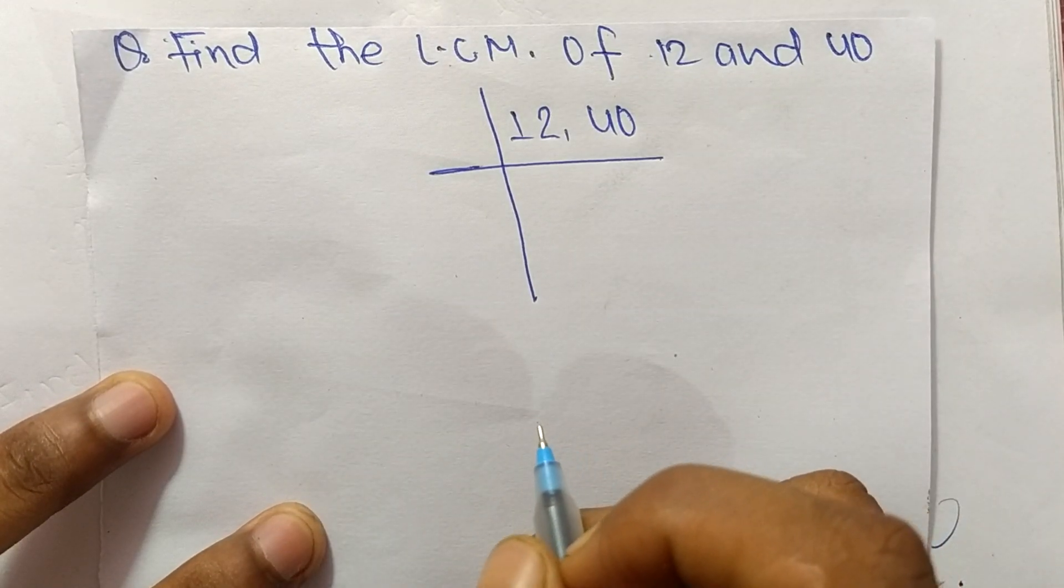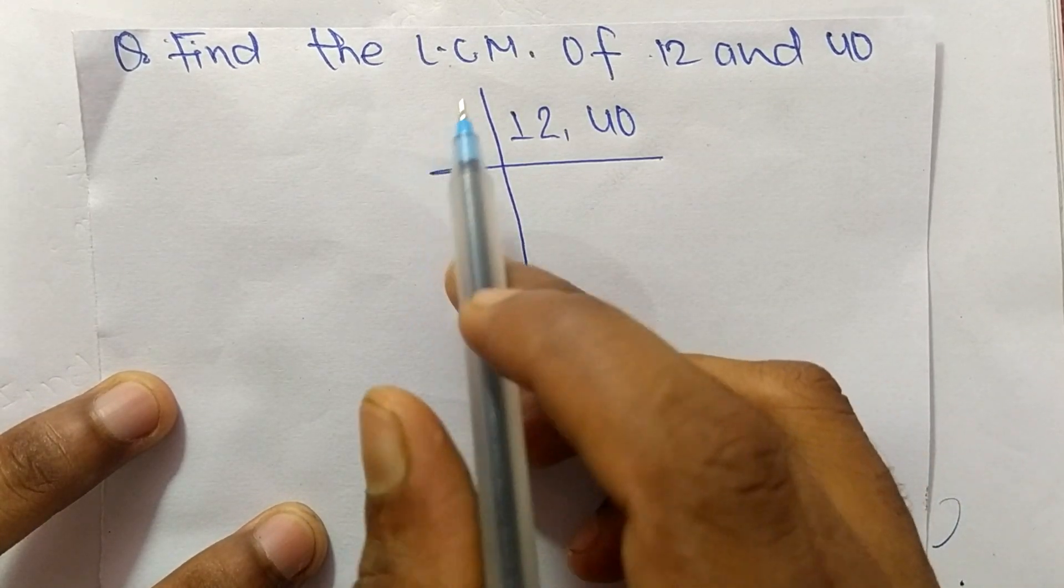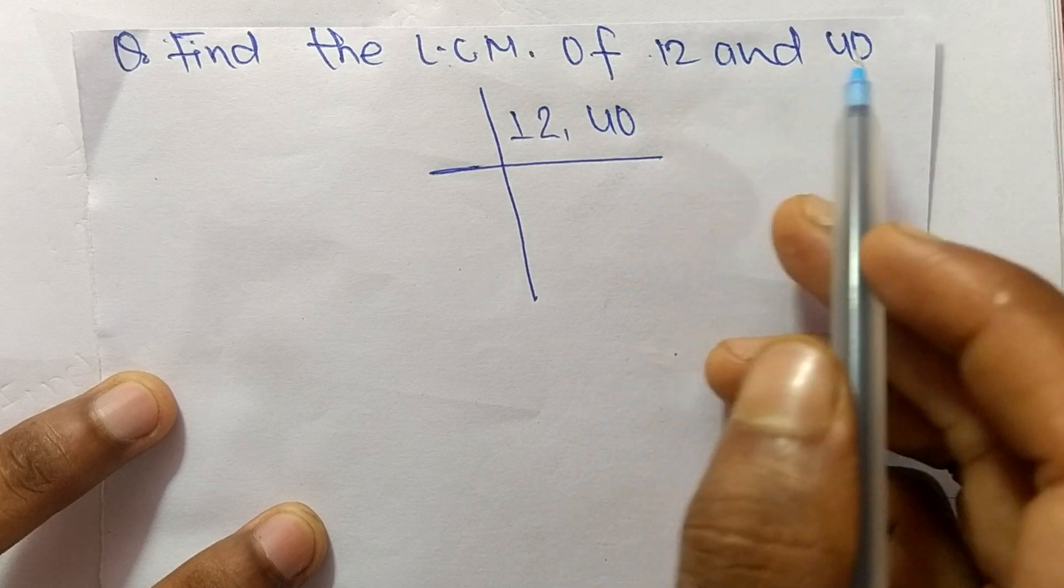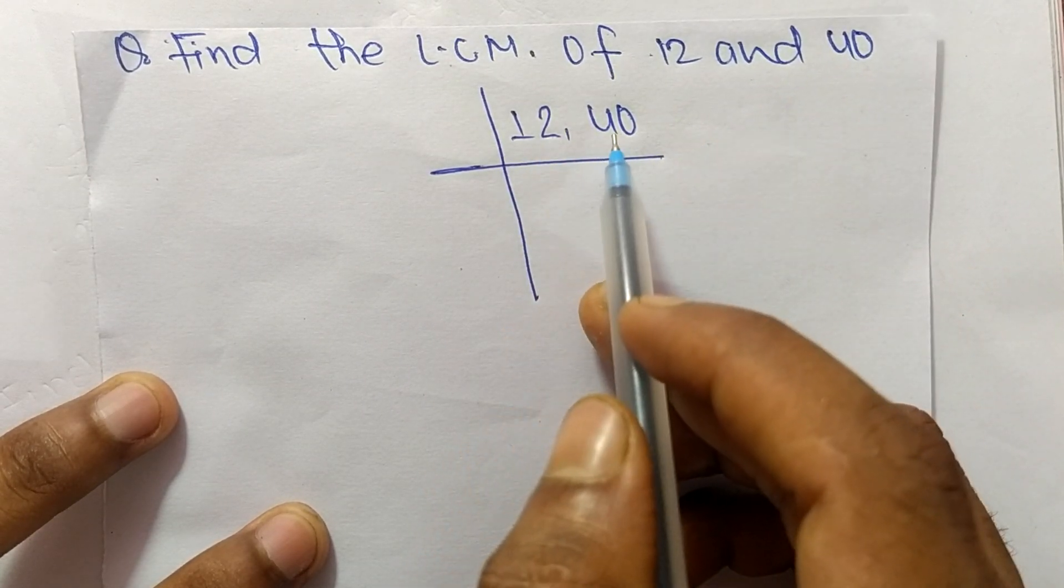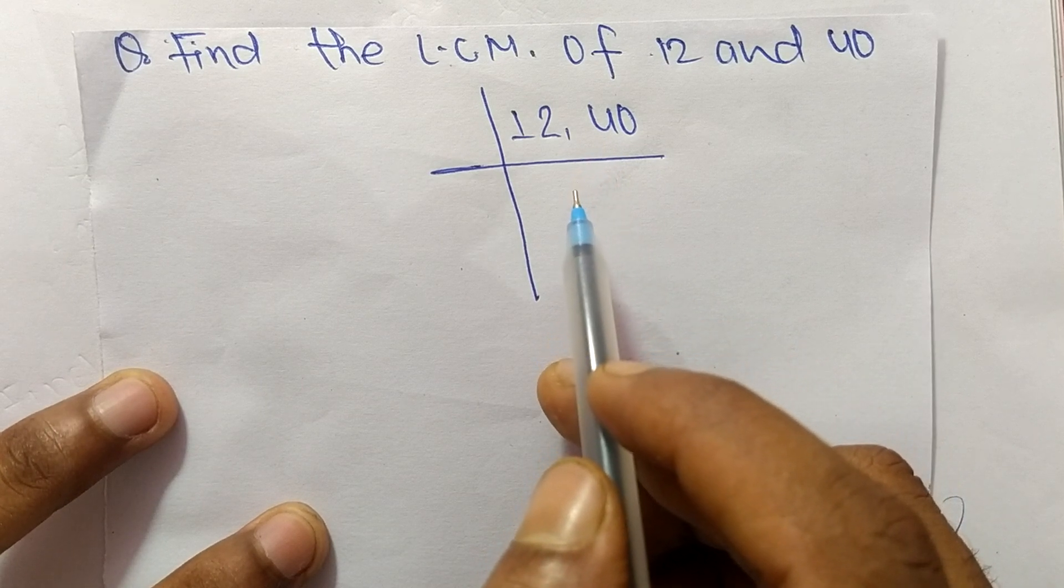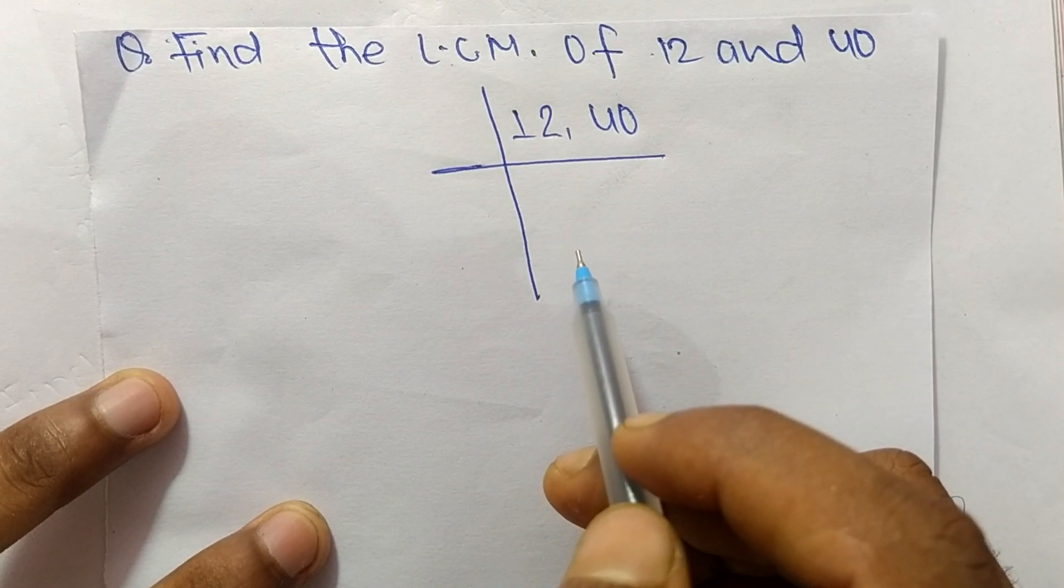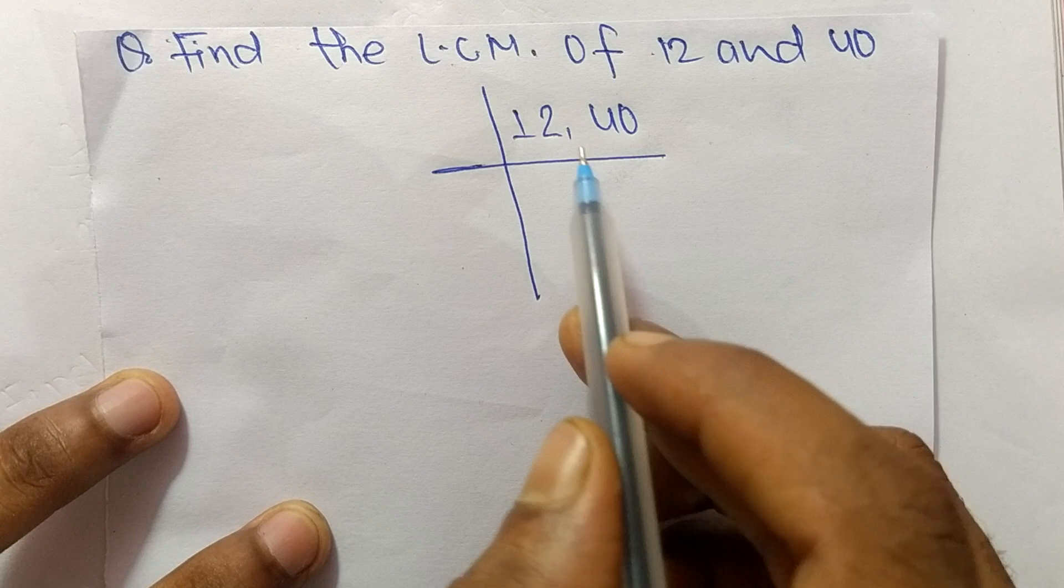So today in this video we shall learn to find the LCM of 12 and 40. To find the LCM of 12 and 40, first of all we have to choose the lowest number that can exactly divide 12 and 40.